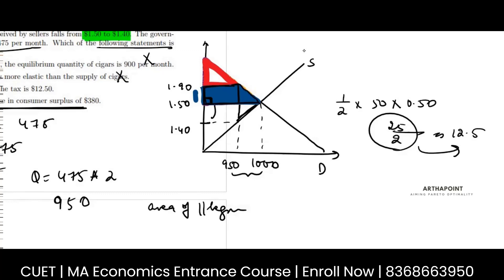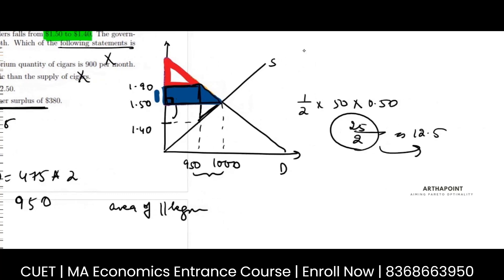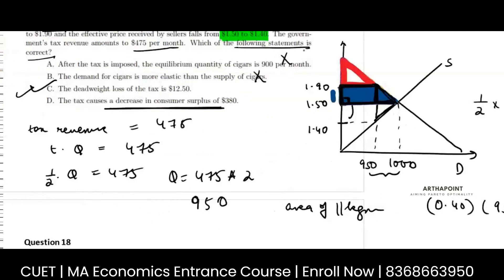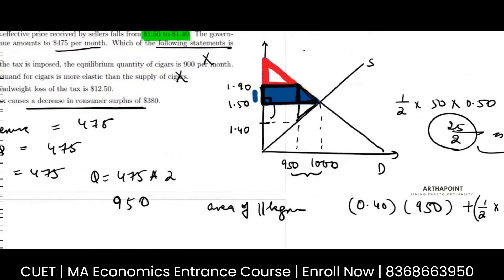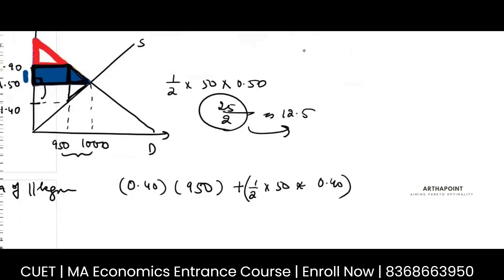So here in this case, what will you do? Area of rectangle - this will be 0.40 into 950. Do we agree? This is 0.40, this is 950, so it is 0.40 into 950 plus area of triangle. This triangle, it is half into base is 50 and height is 0.40. So when you add this together, the diagram is important. That is going to give you the decrease in the consumer surplus.